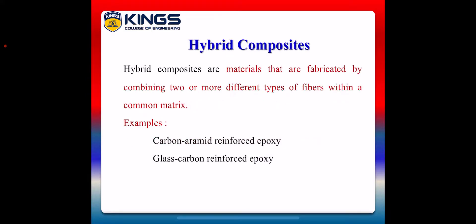Finally, the fourth type of composite is hybrid composites. Hybrid composites are materials fabricated by combining two or more different types of fibers within a common matrix. Examples include carbon-aramid reinforced epoxy and glass-carbon reinforced epoxy — these are very important examples of hybrid composites.